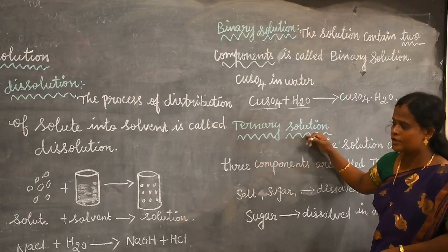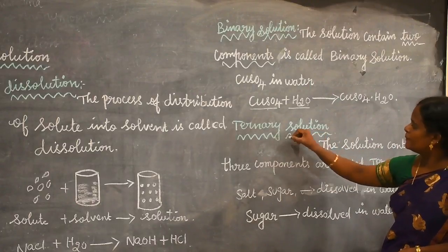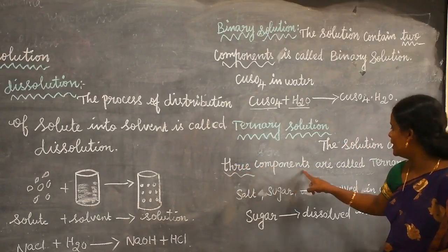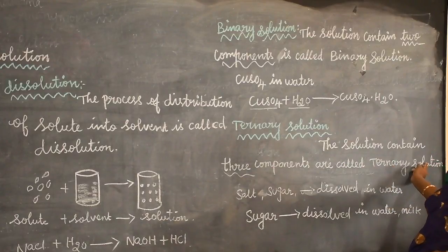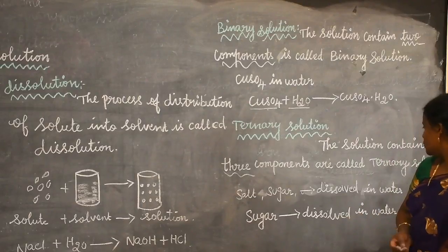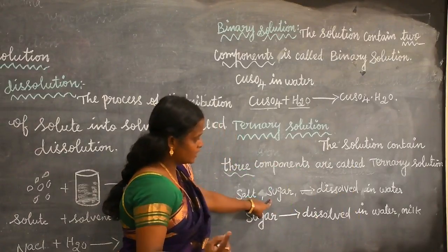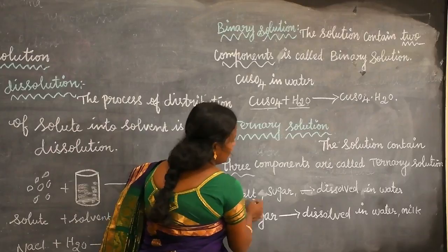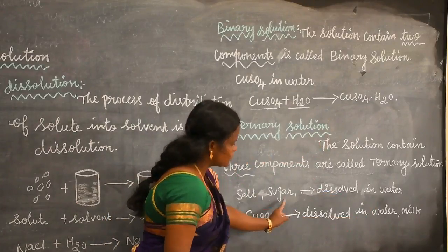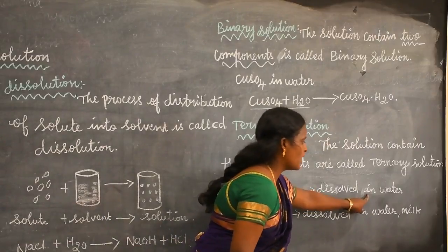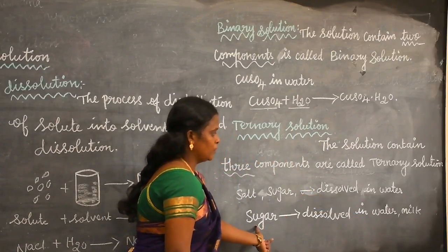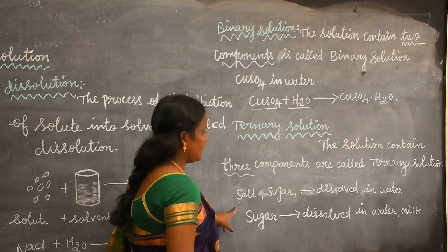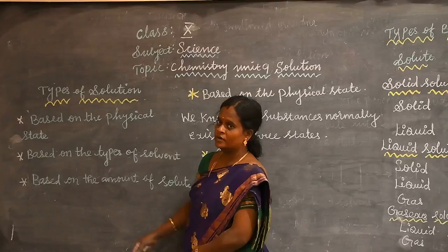Let us see ternary solutions. Ternary means three. What is meant by ternary solution? The solution that contains three components is called a ternary solution. It may be two solutes and one solvent, or one solute and two solvents. For example, salt and sugar dissolved in water — here salt and sugar are solutes and water is a solvent. Another example: sugar is a solute and water and milk are solvents.